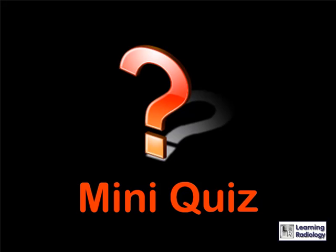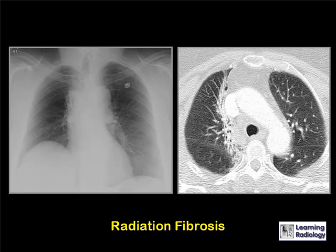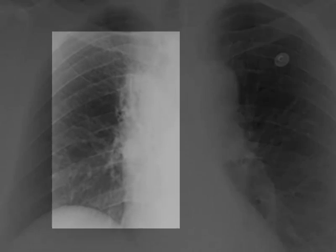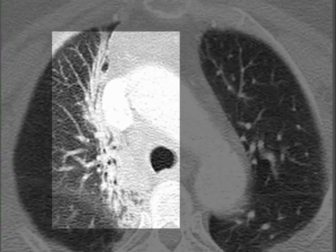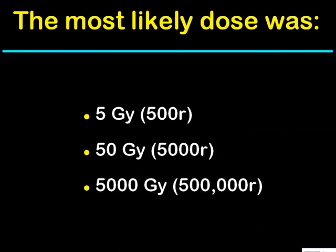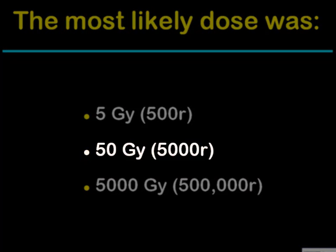For the mini-quiz: this person has radiation fibrosis of their lung, manifest by irregularity in the right paramediastinal region on conventional radiograph and fibrosis with bronchiectasis on CT. What is the most likely dose this patient received to produce those changes — 5 gray (500 rads), 50 gray (5,000 rads), or 5,000 gray (500,000 rads)? The correct answer is 50 gray, or 5,000 rads. Changes in the lungs are not present until after 40 gray or 4,000 rads. 5 gray is far too small a dose, and 5,000 gray would never be delivered.